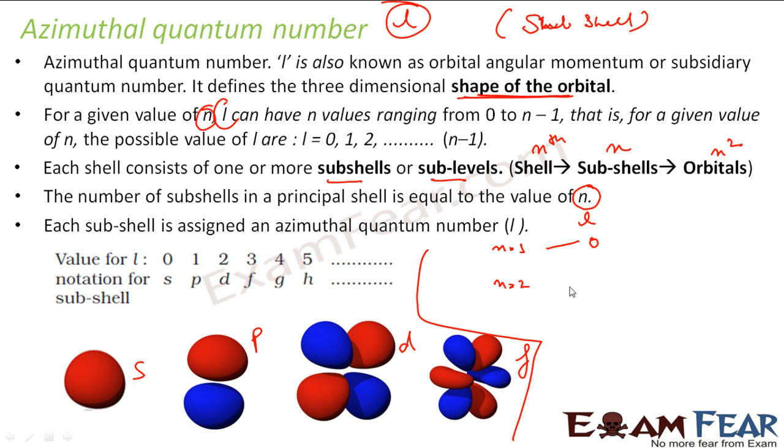If n is equal to 2, L can have value 0 or 1. If n is equal to 3, my L can have value 0, 1 and 2.